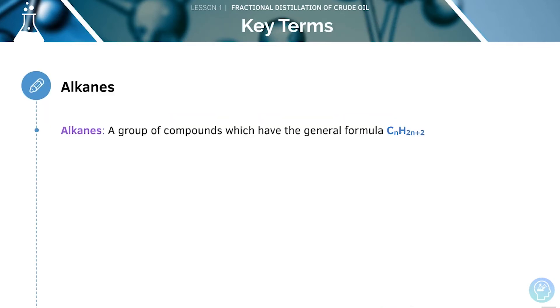Let's start off with some key terms. First, we'll be covering alkanes. These are a group of compounds which have the general formula CnH2n plus 2. For example, we could look at butane.